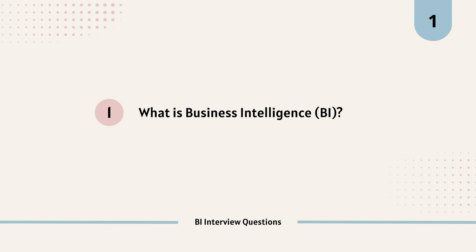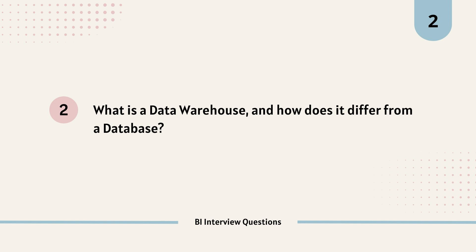Our second question is: what is a data warehouse and how does it differ from a database? A data warehouse is a central repository designed for storing large volumes of structured data from multiple sources, optimized for query and analysis rather than transaction processing. A database, on the other hand, is designed for transactional processing — optimized for create, read, update, and delete operations — and handles current data for day-to-day operations. We can also refer to data warehouses as OLAP (Online Analytical Processing) and databases as OLTP (Online Transaction Processing).